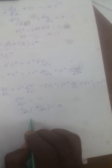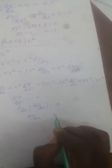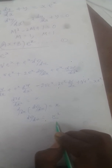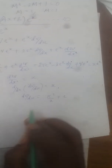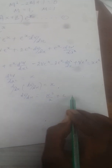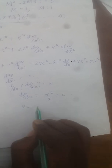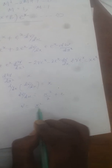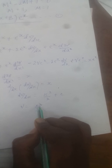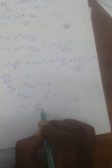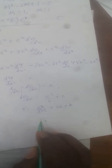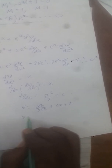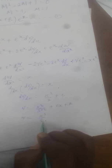Integrating both sides once gives dv/dx = x²/2 + c. Integrating again, v = x³/6 + cx + k, where c and k are constants.